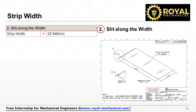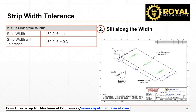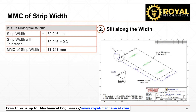Now let's calculate the utilization for option 2: slit along the width of sheet metal. The calculated strip width for option 2 is 32.946 mm. Referring to the general tolerances for linear dimension, consider medium tolerance class for the strip width. The tolerance value shall be plus or minus 0.3 mm. So the strip width for option 2 will be 32.946 plus or minus 0.3 mm. The maximum material condition (MMC) for the strip width for option 2 will be 33.246 mm.